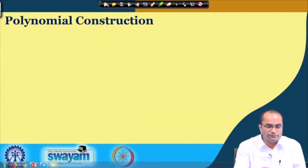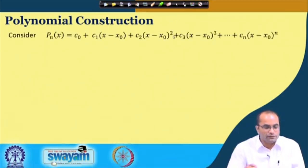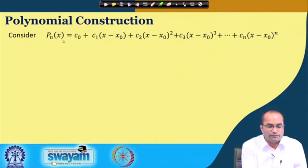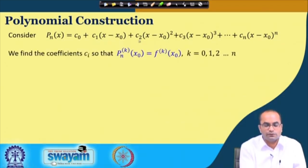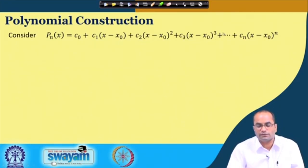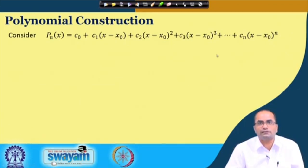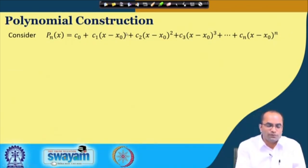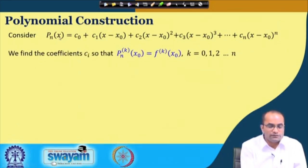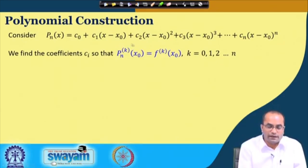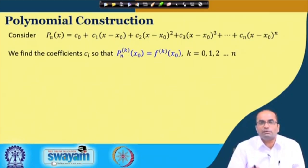We assume a general polynomial of degree n in the special form: P_n(x) = c₀ + c₁(x − x₀) + c₂(x − x₀)² + c₃(x − x₀)³ + ⋯ + cₙ(x − x₀)ⁿ. We take this special form for convenience in evaluating the unknowns c₀, c₁, c₂, etc. Now we want to find these coefficients based on the conditions that up to the nth order derivative of this polynomial at x₀ must equal the respective derivatives of the function at x₀.